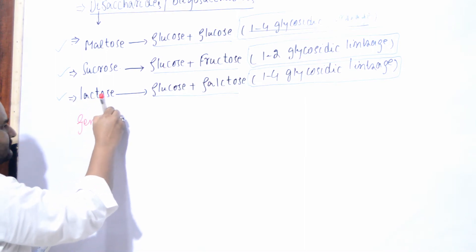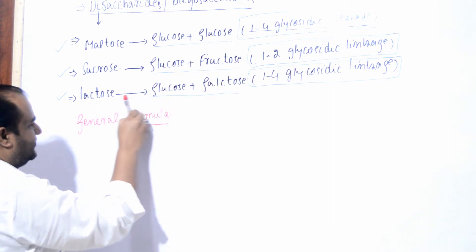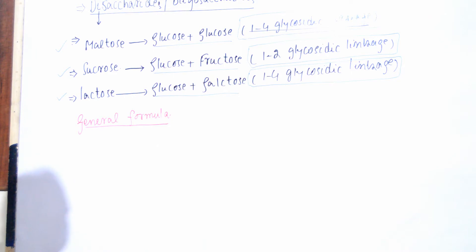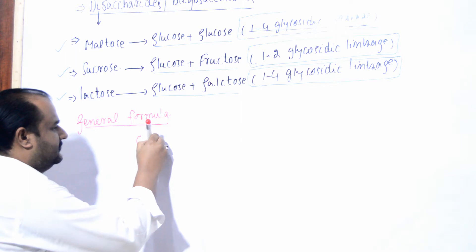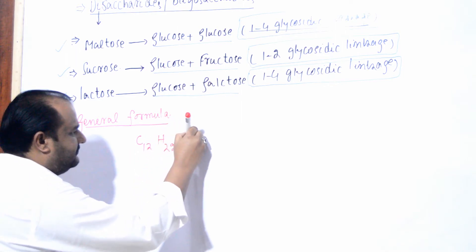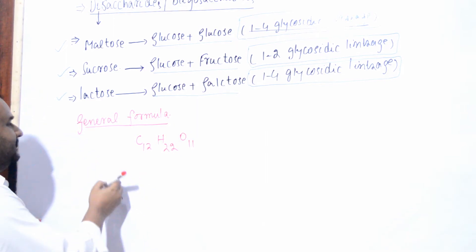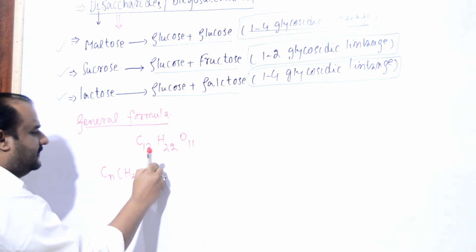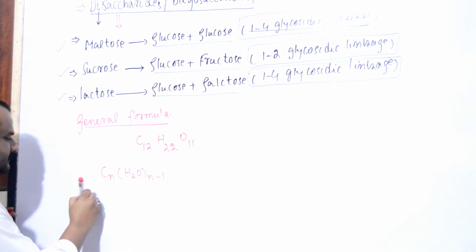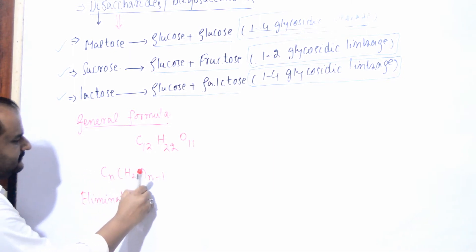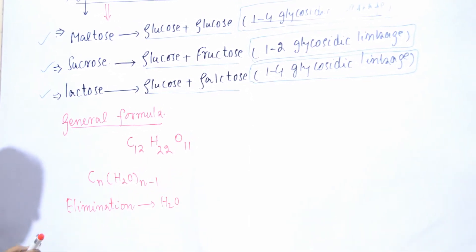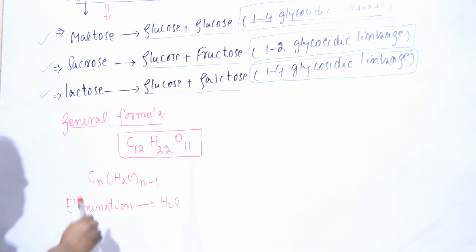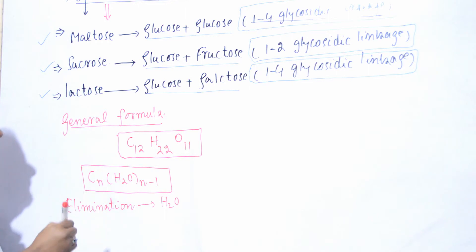In the general formula, if I write directly, you can see that monosaccharide is C6H12O6. The disaccharide formula is C12H22O11. This formula is only for the disaccharide - that is not for oligosaccharide.